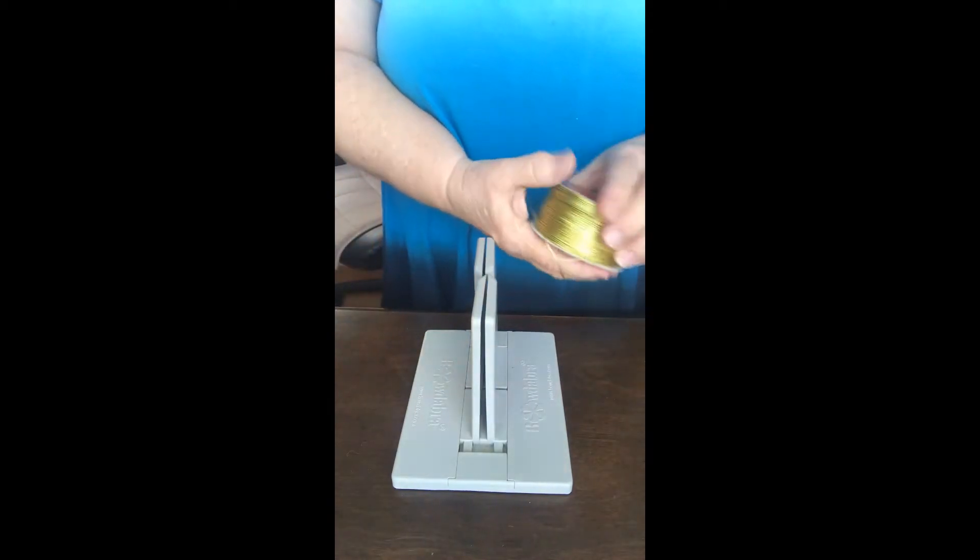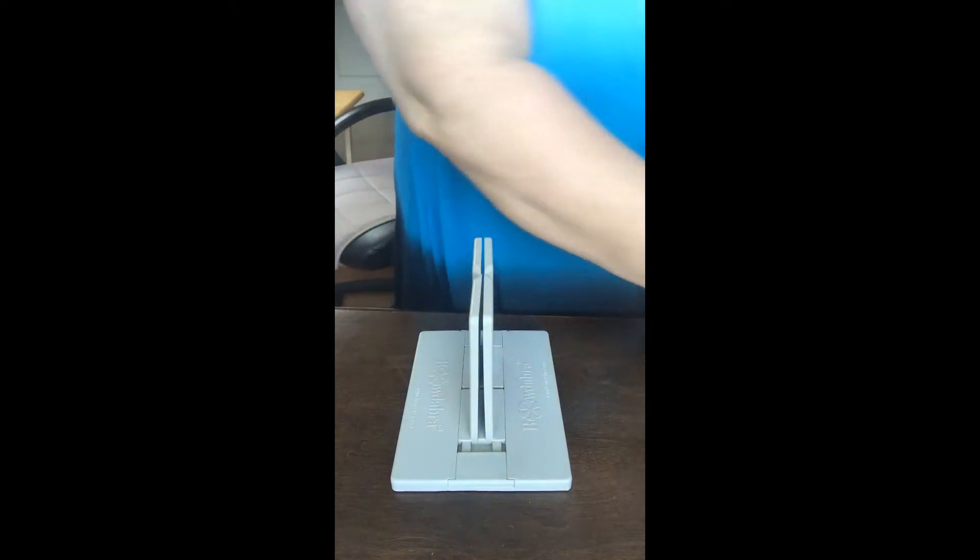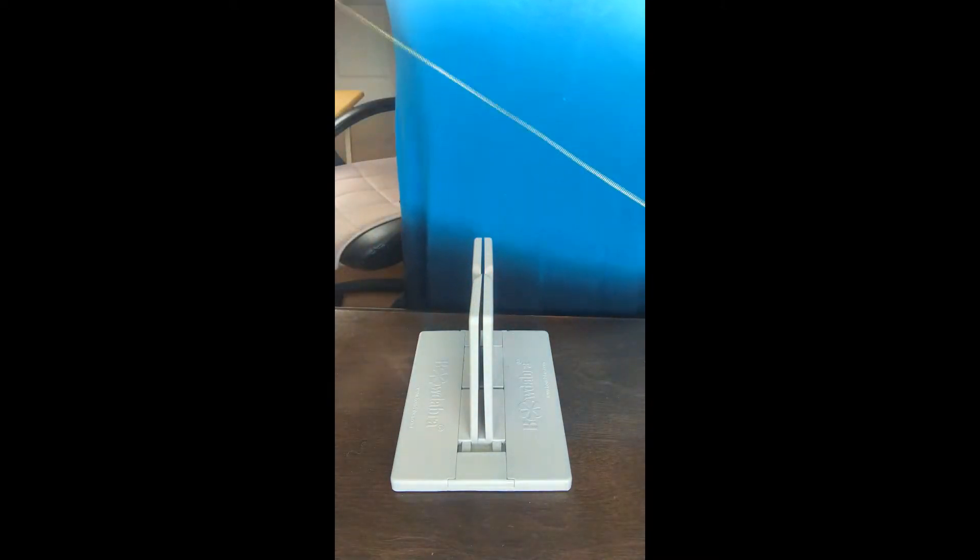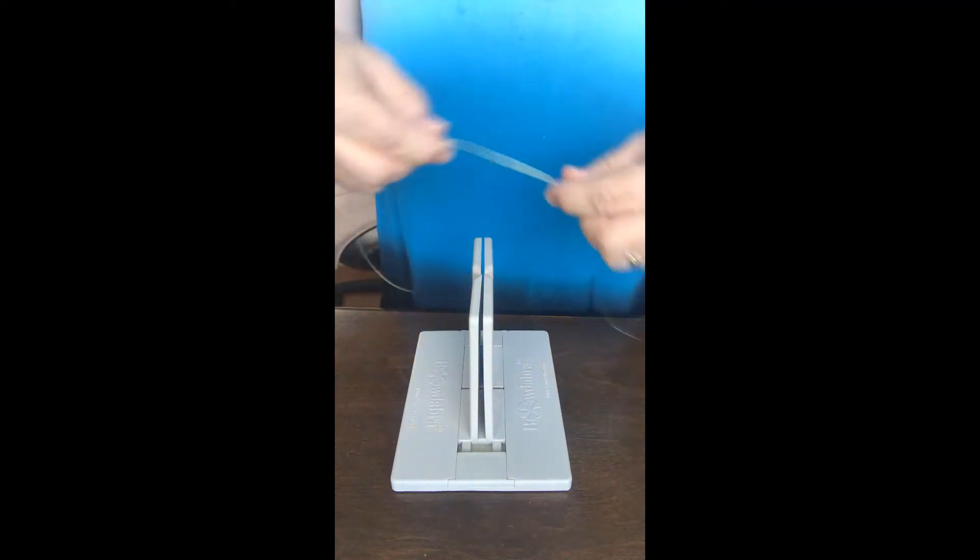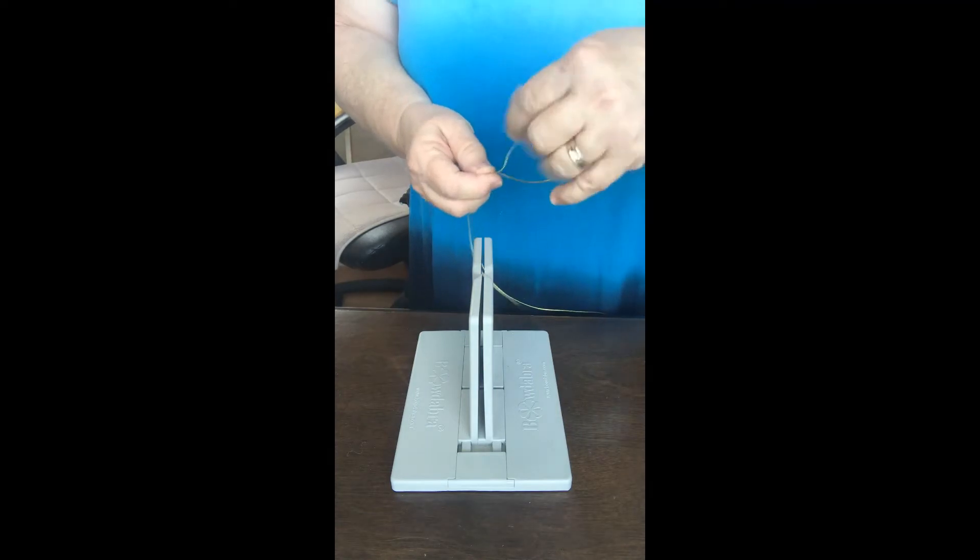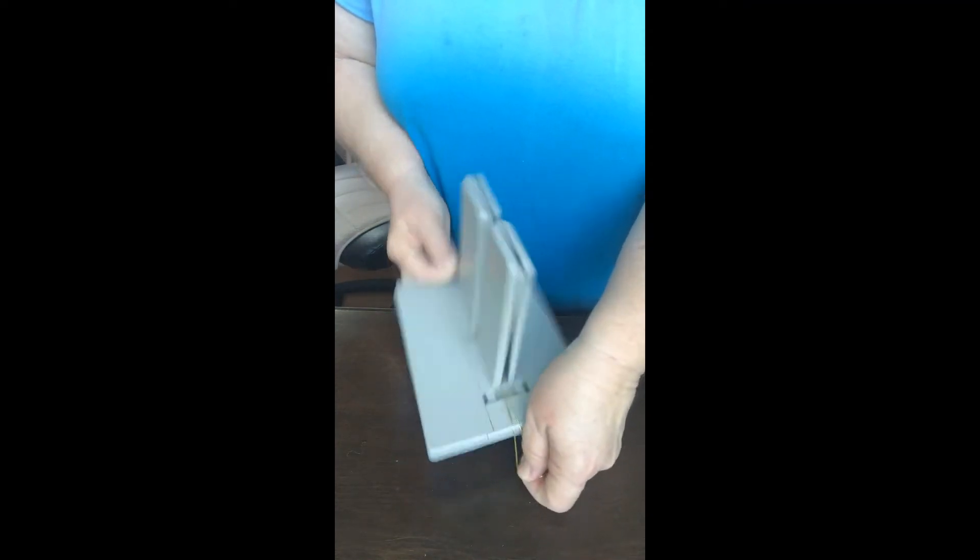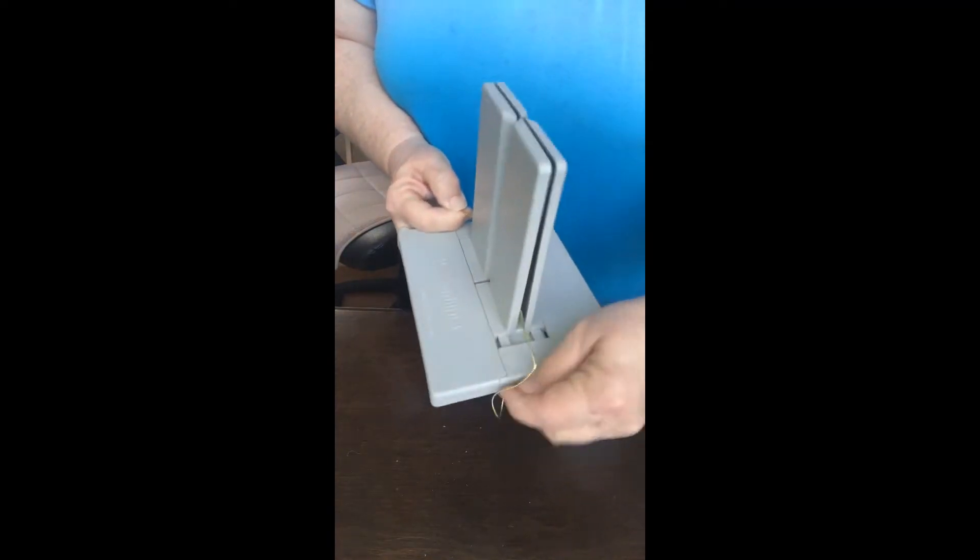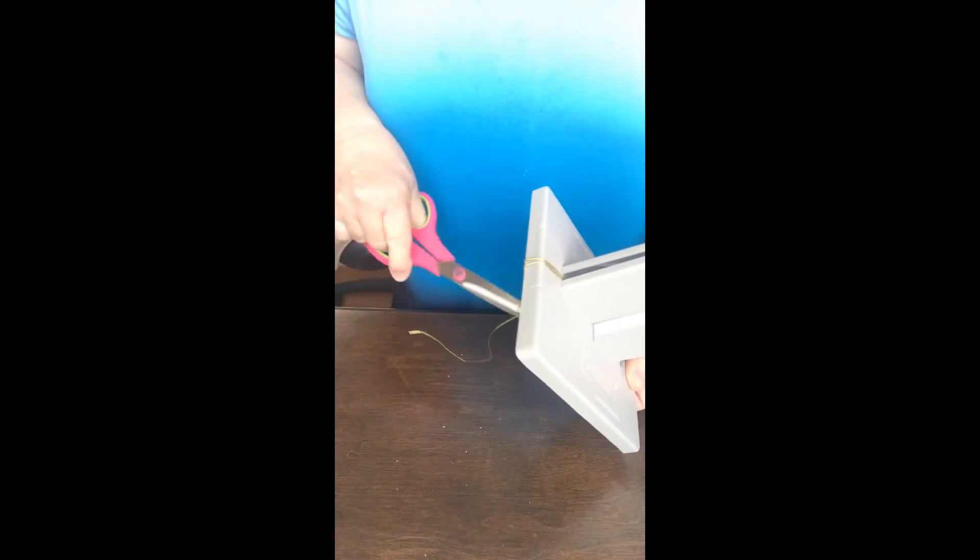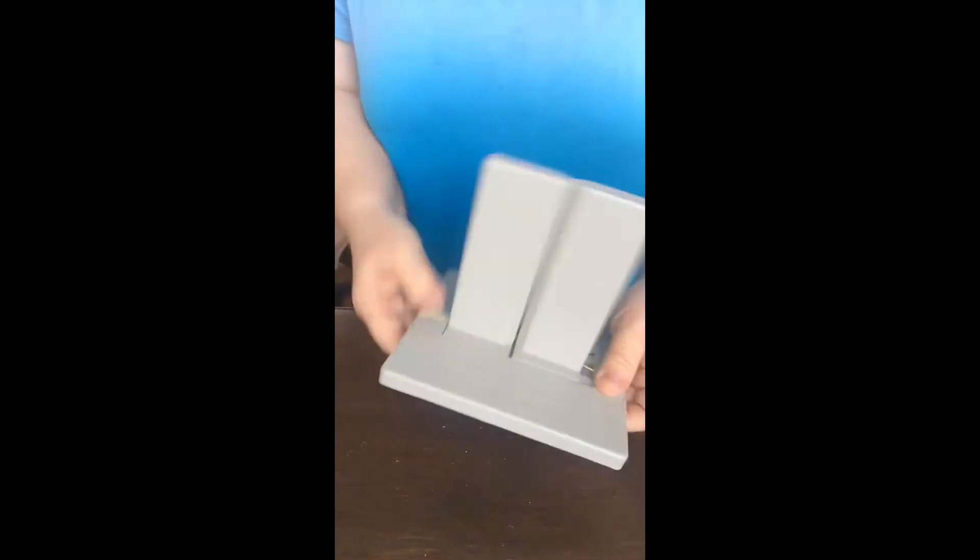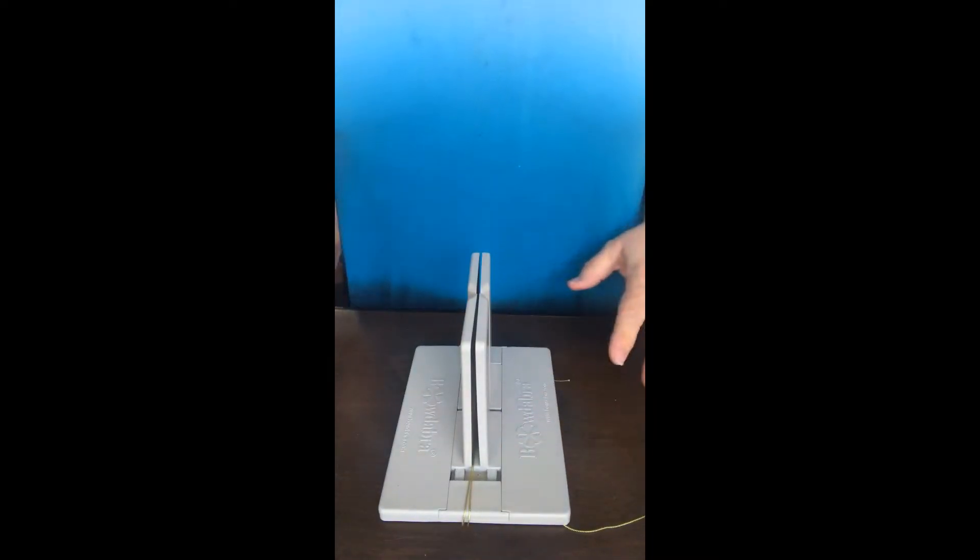Let's start out with our Bowdabra wire, which is fabulous. You want to pull a length of your wire, double it preferably, push it down through the two center openings, pull it around the end, and snip that off. Okay, let's get started.